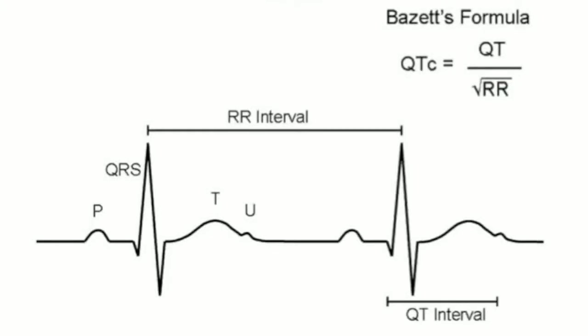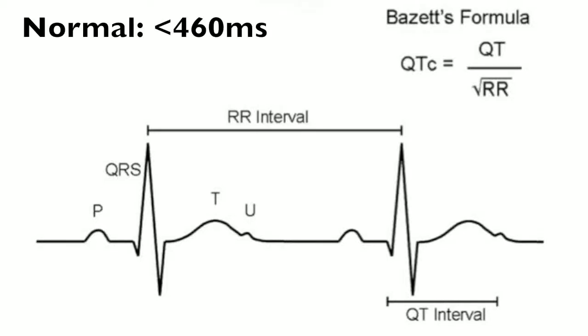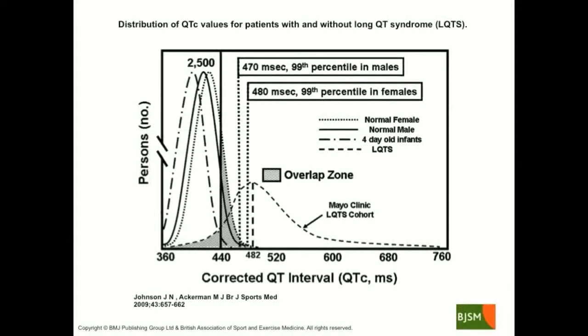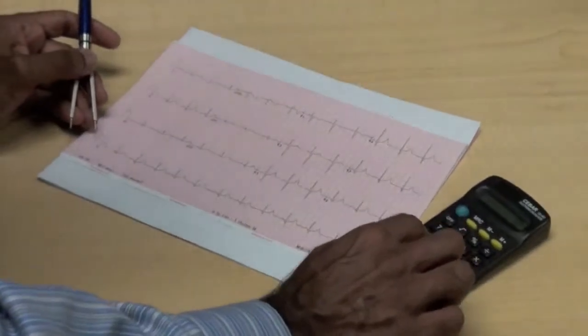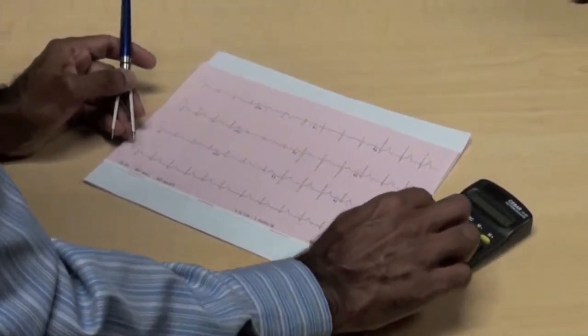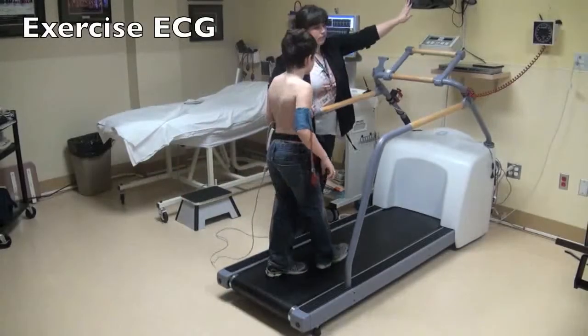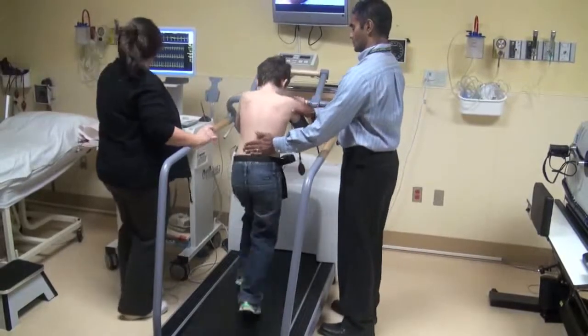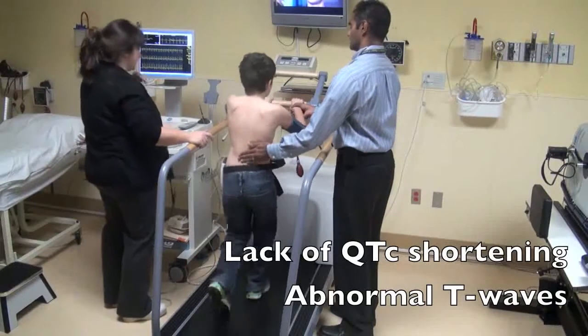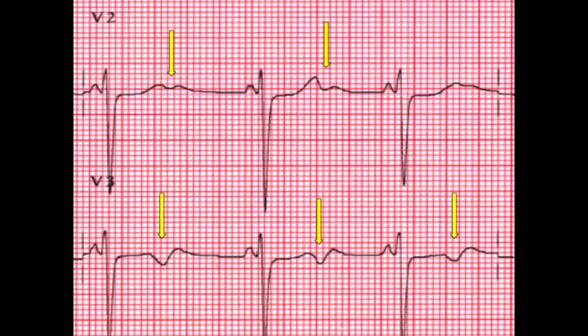The manually derived QT interval should be corrected to account for heart rate. The corrected value is referred to as QTc and can be calculated using Bazet's formula. While a normal value for the QTc is less than 460 ms, there are individuals with QTc values below this who have Long QT Syndrome, and individuals with values above this who do not. As the use of genetic testing has increased, we have learned that at least one-quarter of individuals harboring a Long QT susceptibility mutation have a QT interval in the normal range. An exercise ECG in which the QT interval is measured during recovery can also be used in the workup of patients with suspected LQTS. Findings suggestive of LQTS include a lack of shortening of QTc and abnormal T wave morphology such as T alternans and notched T waves.